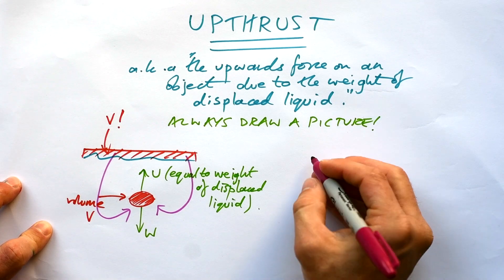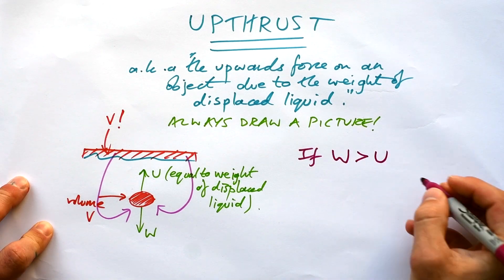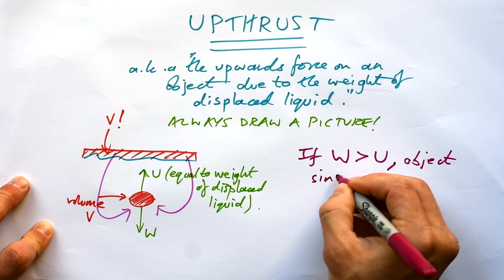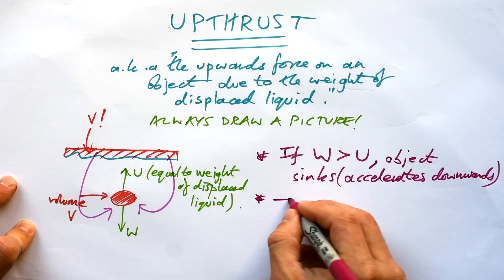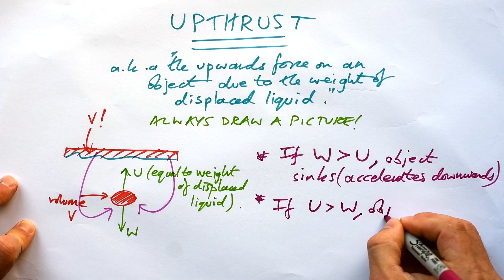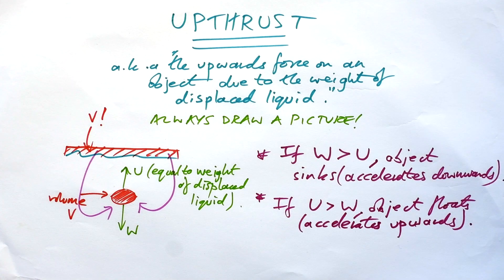So what do we know is true? Just thinking about forces here, if weight is bigger than the upthrust, because they're both always going to be there, object sinks. However, if upthrust is greater than the weight, the opposite is going to happen. Object floats.